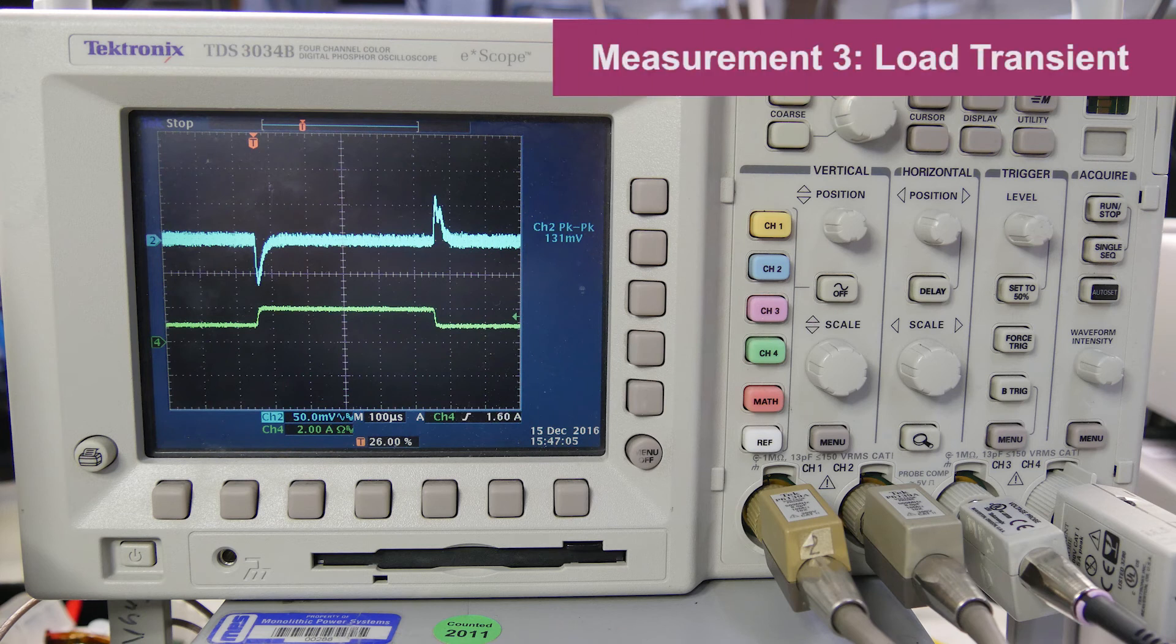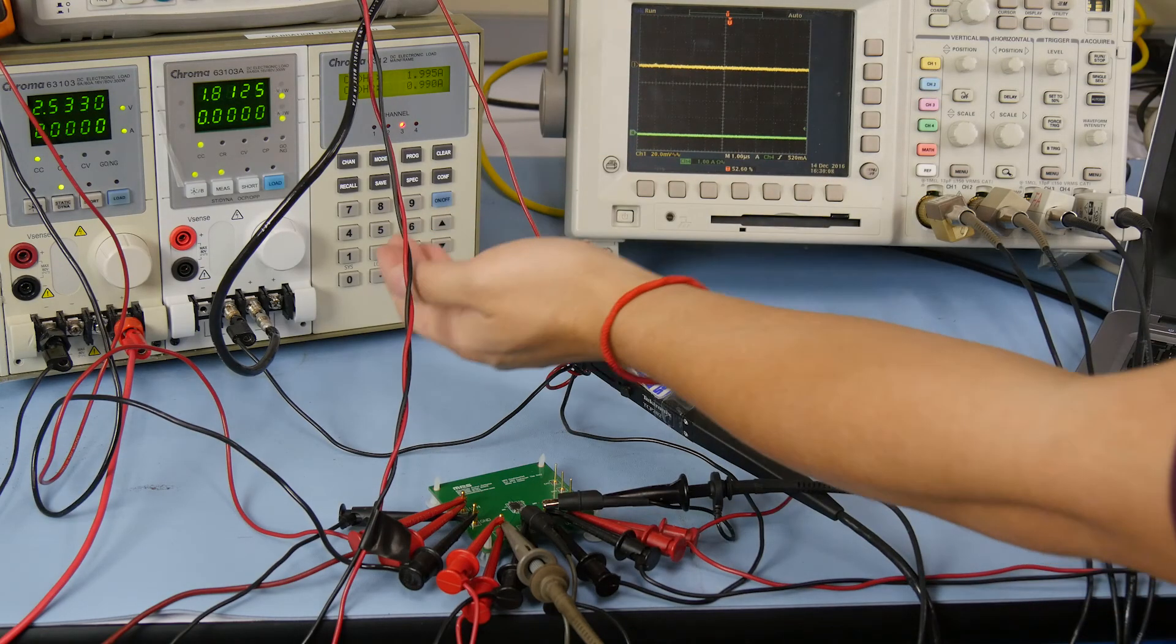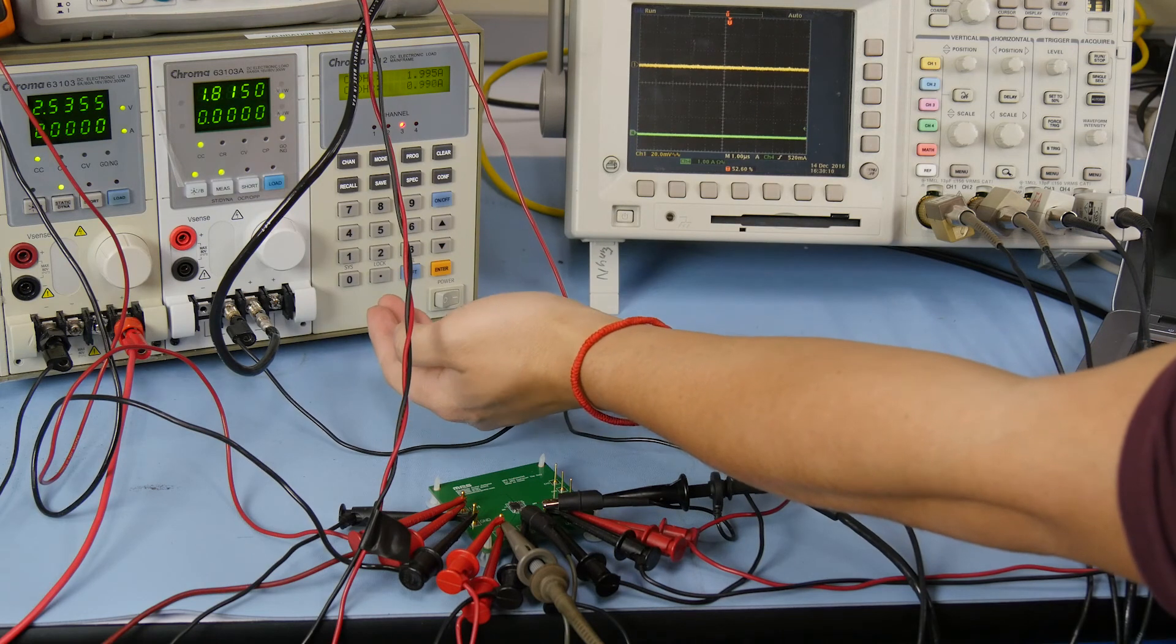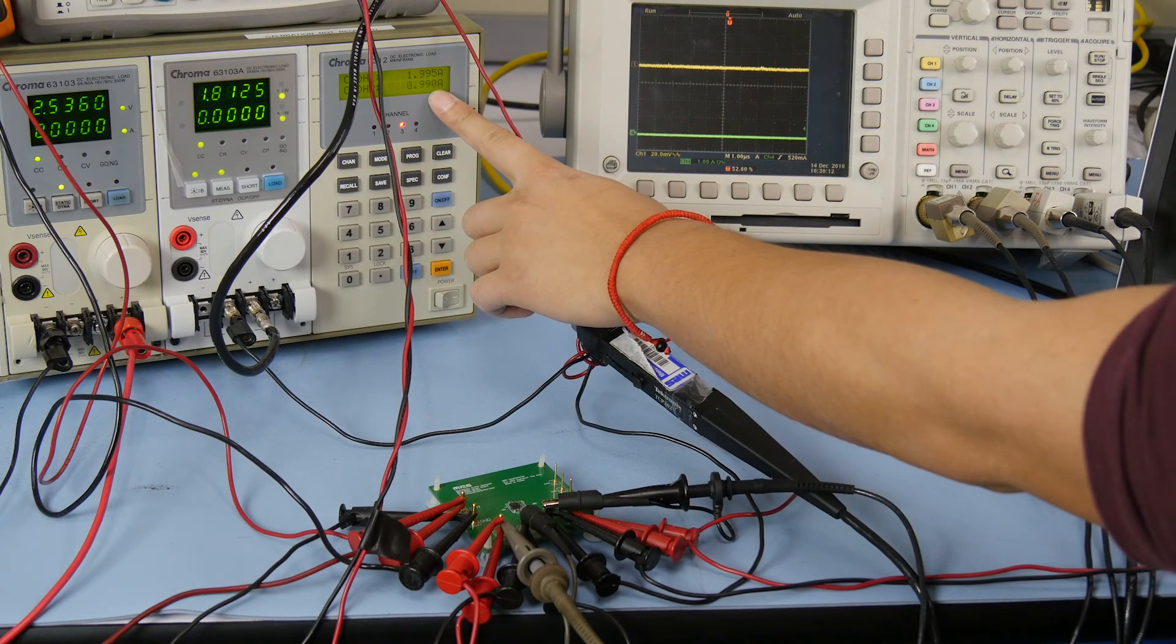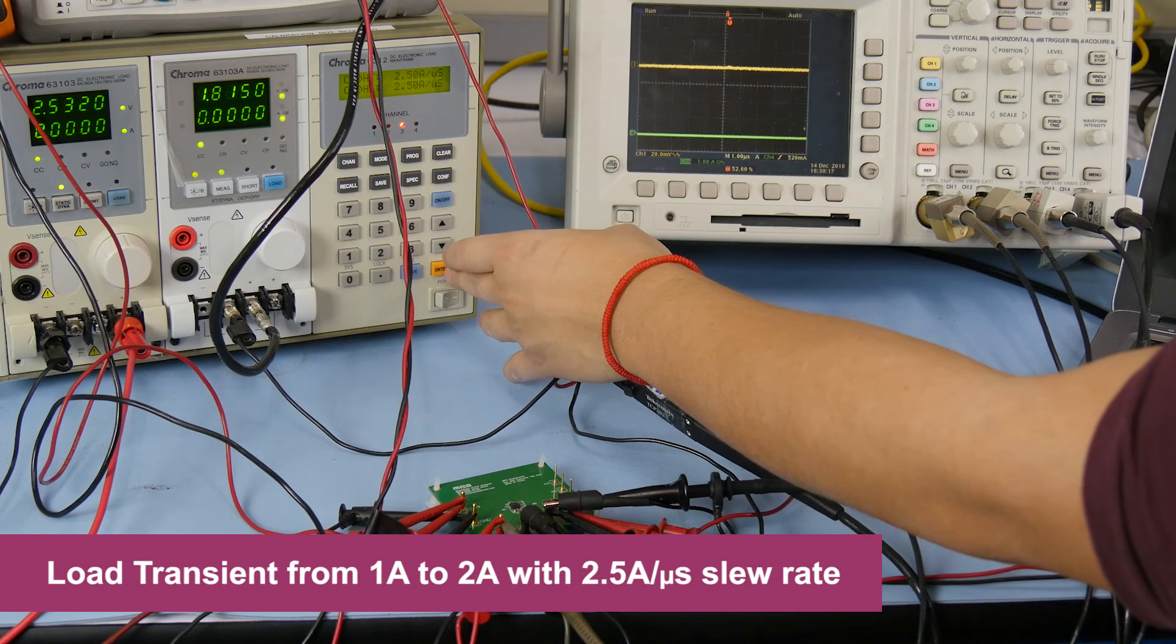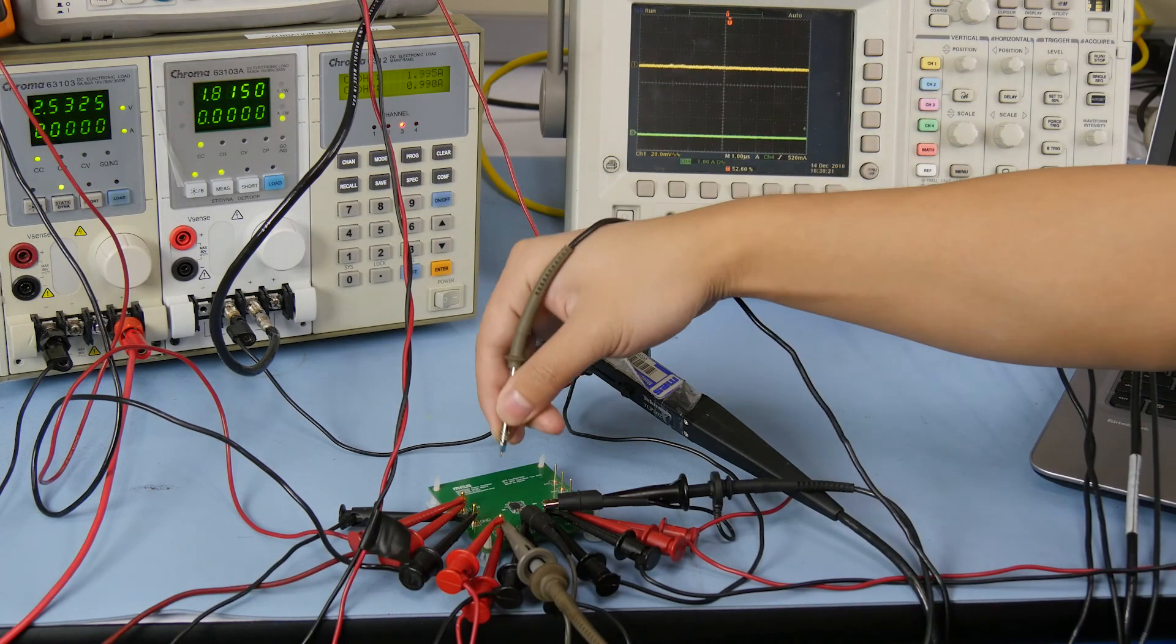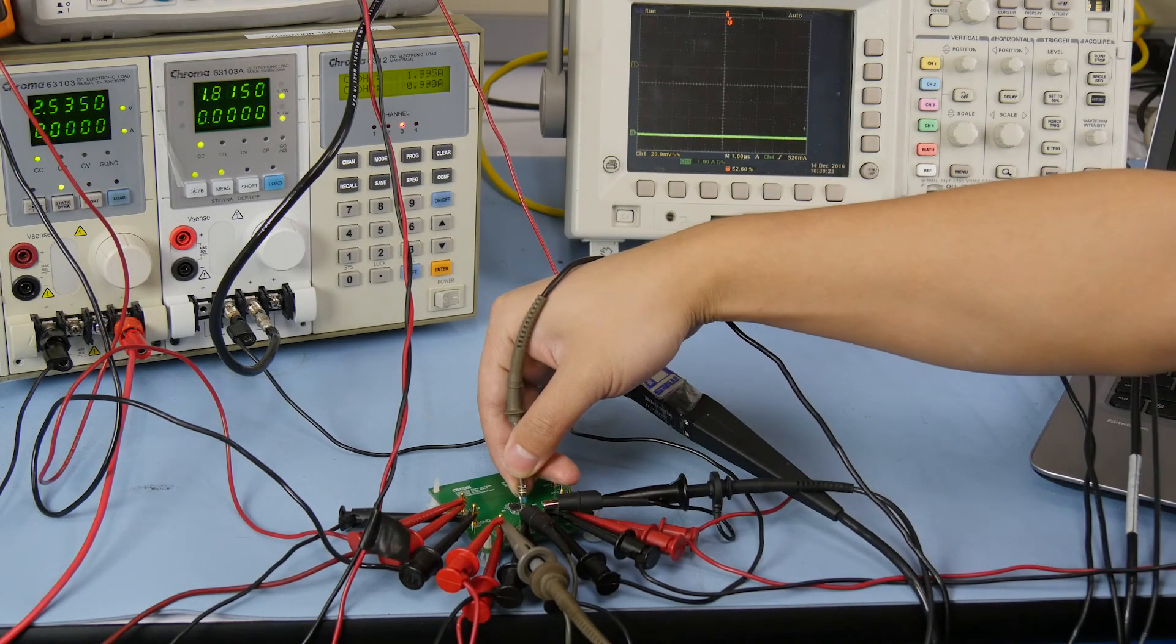The last step is load transient. Again, using the same test setup, adjust the electronic load to proper specs such as a load transient from 1A to 2A with 2.5A per microsecond slew rate. We now connect the current probe to the scope to measure load current.